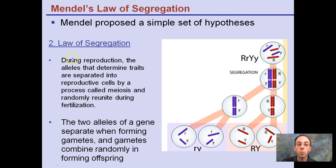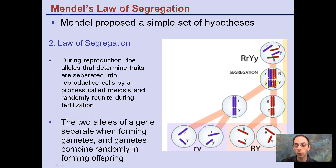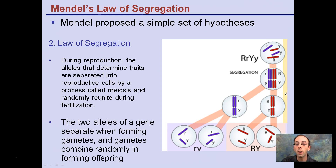Another law is the law of segregation. During reproduction, the alleles that determine traits are separated into reproductive cells by a process called meiosis and randomly unite during fertilization. The two alleles of a gene separate when forming gametes, and the gametes combine randomly to form an offspring. This segregation is the separating out — segregating where those alleles go.